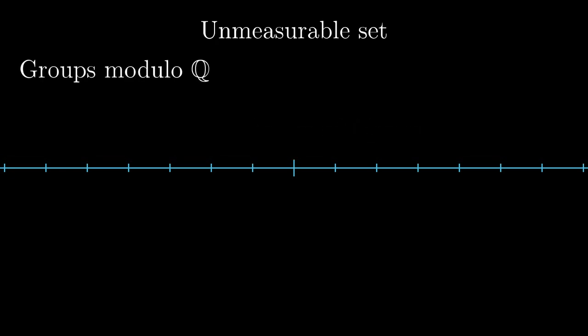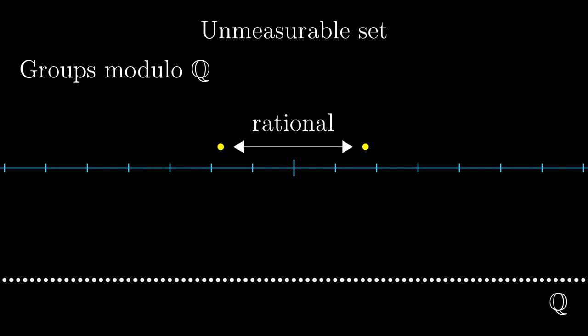This time we split all the real numbers into groups modulo Q. It means that we put two real numbers into one group if and only if they differ by a rational number. A typical example of such a group is the set of all the rational numbers. In general, we construct such a group by taking a fixed real number, say the square root of 2, and shift all the rational numbers by it.